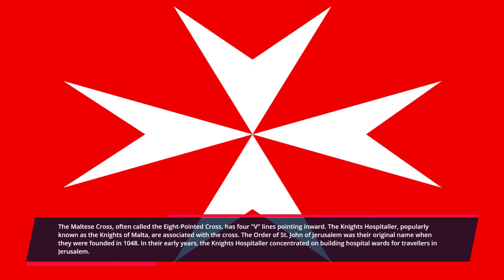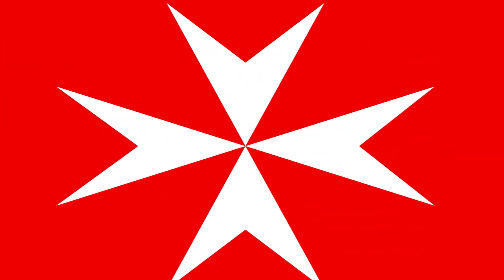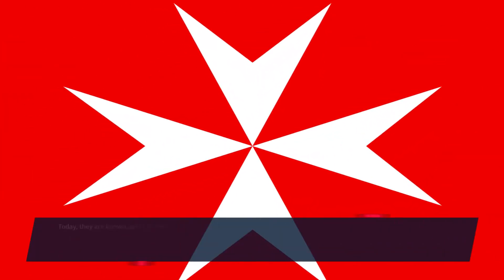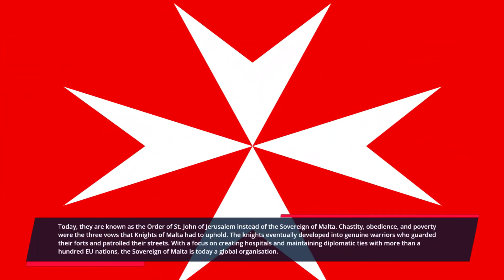Number two: the Maltese Cross. The Maltese Cross, often called the eight-pointed cross, has four V-shaped lines pointing inward. It is associated with the Knights Hospitaller, popularly known as the Knights of Malta. Their original name was the Order of Saint John of Jerusalem, founded in 1048. In their early years, the Knights Hospitaller concentrated on building hospital quarters for travelers in Jerusalem.